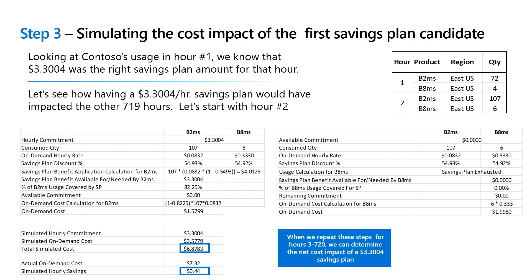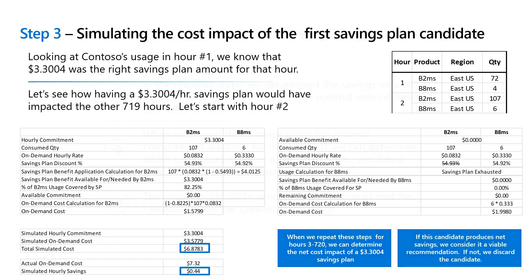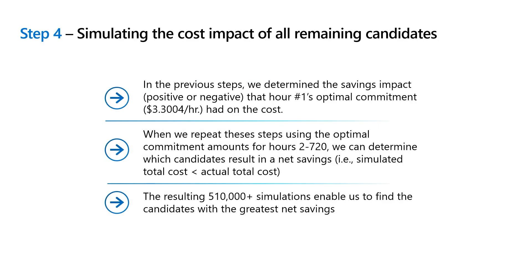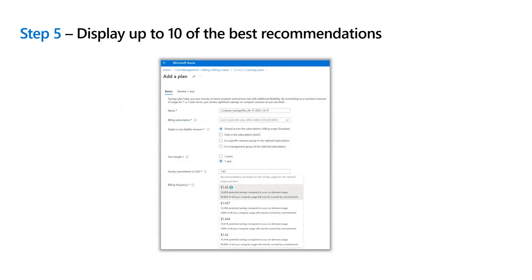As we go through each hour, if a candidate results in positive savings we keep it; if it doesn't, we discard it. We run this analysis for hour two, hour three, all the way to hour 720. When we finish, we compare all 720 candidates — simulating each one against every single hour. The result is over 500,000 calculations and simulations done on your behalf. When the whole process finishes, we select up to 10 candidates that actually resulted in savings.